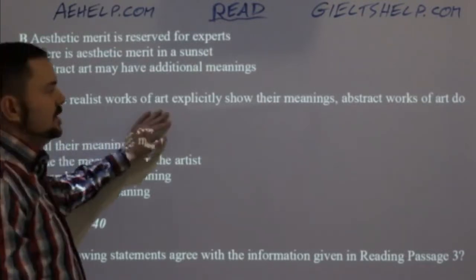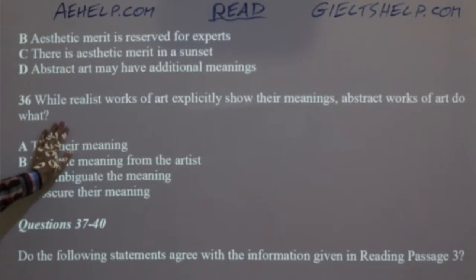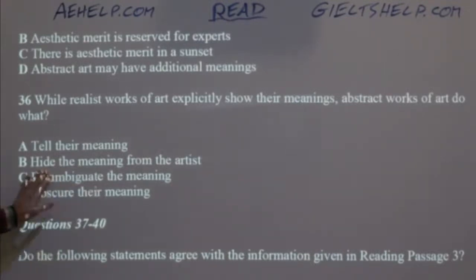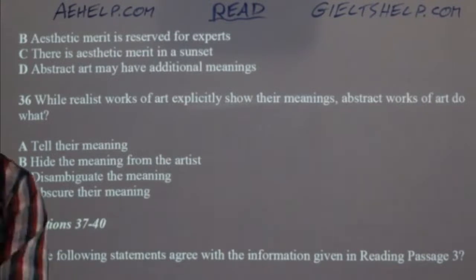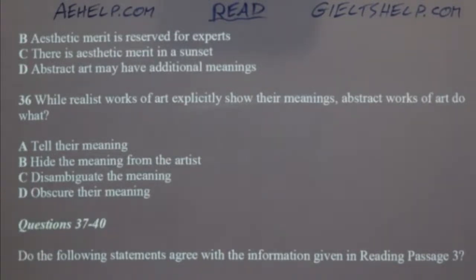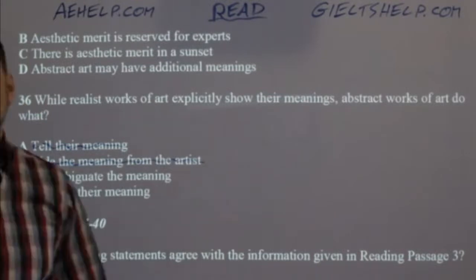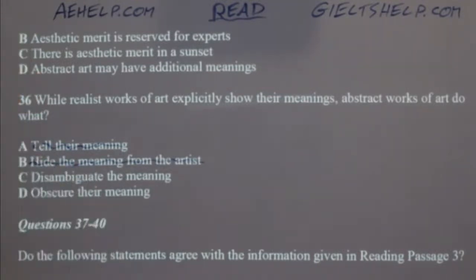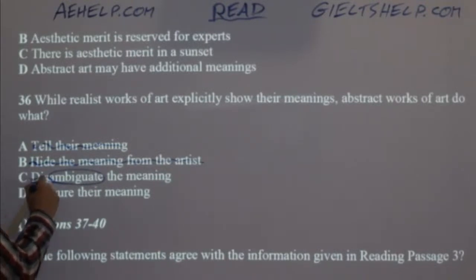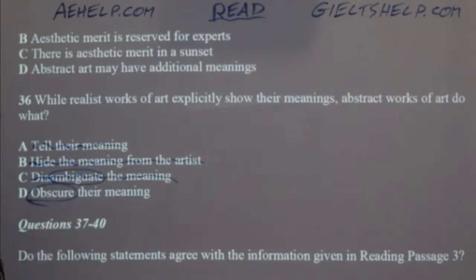Question 36: while realist works of art explicitly show their meaning, abstract works of art do what? They hide their meanings — it's unclear, ambiguous. Looking at the choices: tell their meaning — no. Hide the meaning from the artist — well, maybe not from the artist specifically, because if you're the artist you know what you're painting. Disambiguate — that would mean to make clear, so that's not right. Obscure the meaning — yes, 'obscure' is another way to say 'hide.' So D is correct: abstract works obscure the meaning.